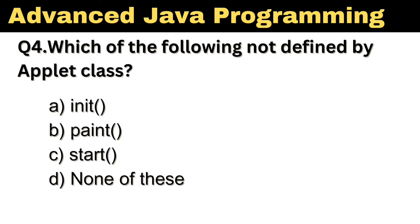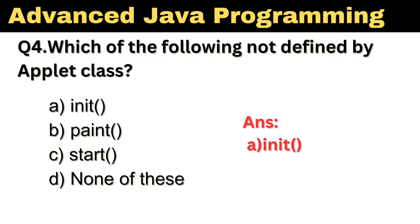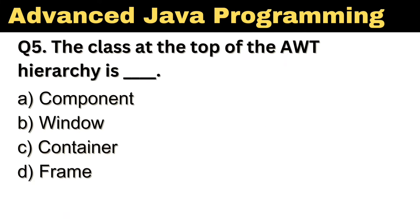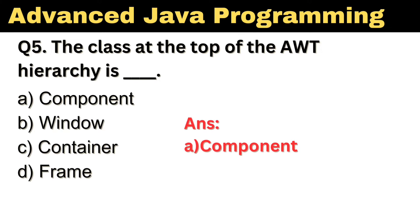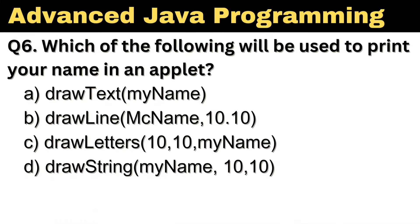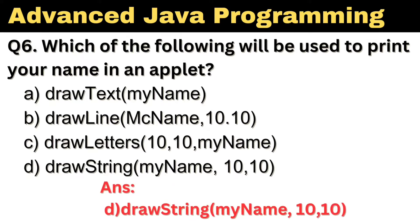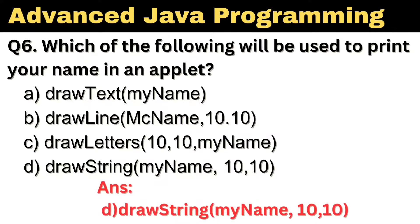Question No. 4: Which of the following is not defined by Applet class? The right answer, Option A, Init. Question No. 5: The class at the top of the AWT hierarchy is dash. The right answer, Option A, Component. Question No. 6: Which of the following will be used to print your name in an Applet? The right answer, Option D, DrawString, MyName, 10, 10.